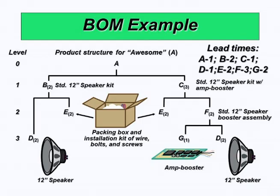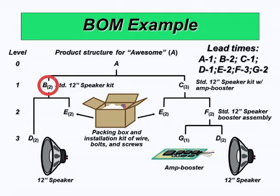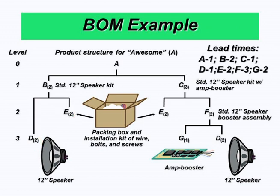Each B requires two D's and two E's. B is called the parent and D and E are the two children. You see here that there are A through G — seven different end items, sub-assemblies, raw materials, and components.